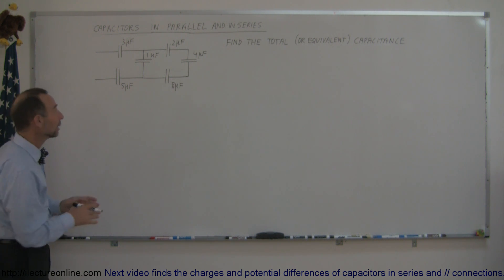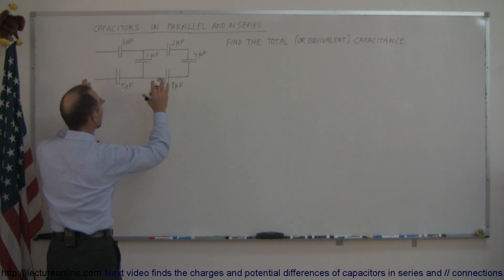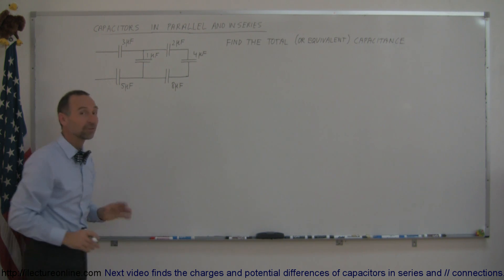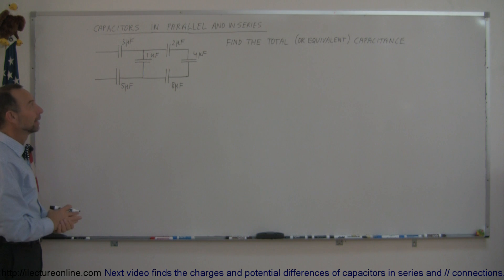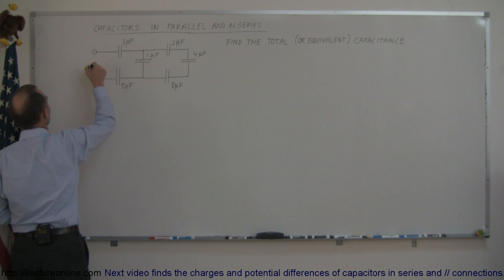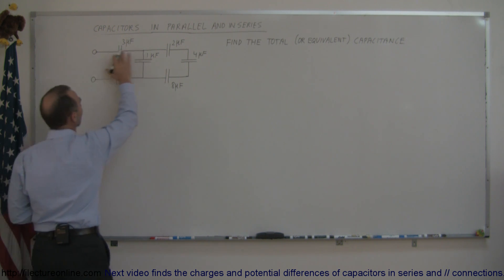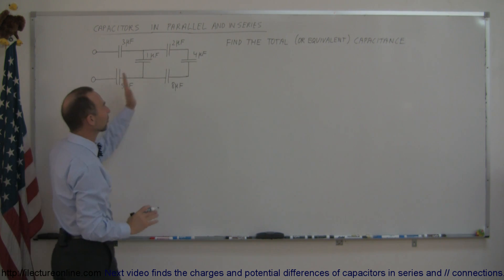What you're trying to do here is take this whole circuit and replace it by a single capacitor that has the same electrical properties of all those combined. In a circuit like this, you try to start from the very back and work your way to the front.